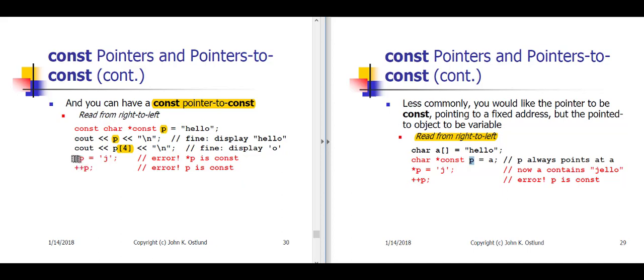But it's an error for us to attempt to modify the char that P is pointing to, so we cannot say star P gets little j. Likewise, it's an error to modify P itself. So we cannot say plus plus P. Okay, so we have pointers to const, which we've been dealing with for a long time. We also have const pointers, and here on slide 30, we've introduced the idea of a const pointer to a const.